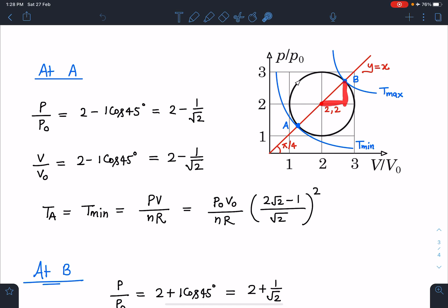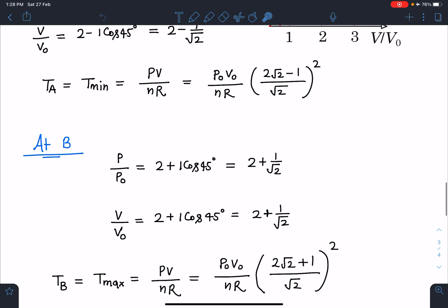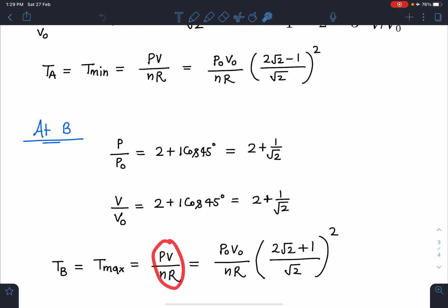Both are known to us. P/P₀ value at this point is 2+1/√2, and V/V₀ value is again 2+1/√2. Temperature at B, which is the maximum temperature, is simply PV/(nR), so it is P₀V₀/(nR), which is (2√2+1)/√2 whole square.